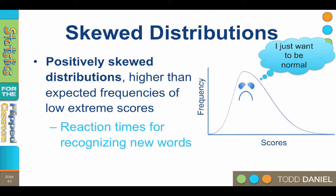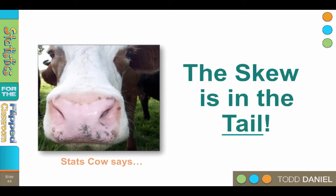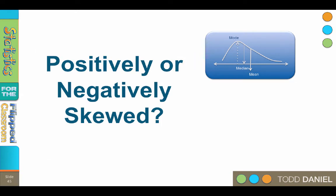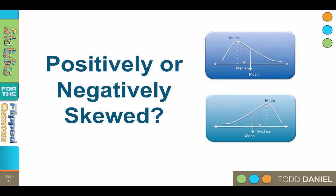How can you remember which direction is positive or negative when we talk about skewness? StatsCow tells us that the skew is in the tail. Skewness is caused by outliers — extreme scores in the tail of the distribution. The direction that the tail is pulled out, positive or negative, is the direction of the skew. Here are two curves: the first one is positively skewed and the second is negatively skewed. The top curve is positively skewed because the tail is pulled out on the right, or positive direction of the number line. The bottom curve is negatively skewed — the tail is pulled out on the negative, or left end, of the number line.